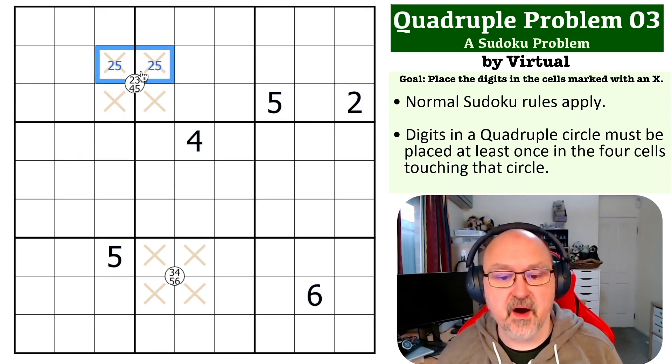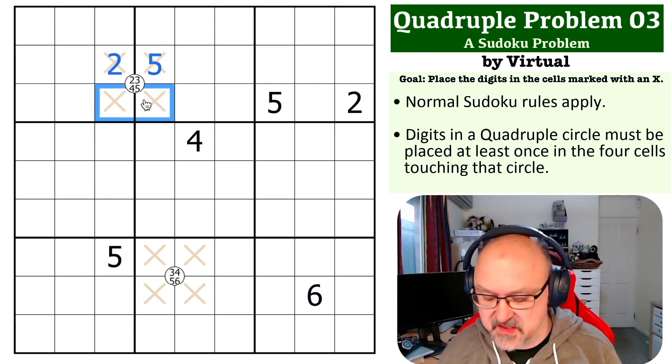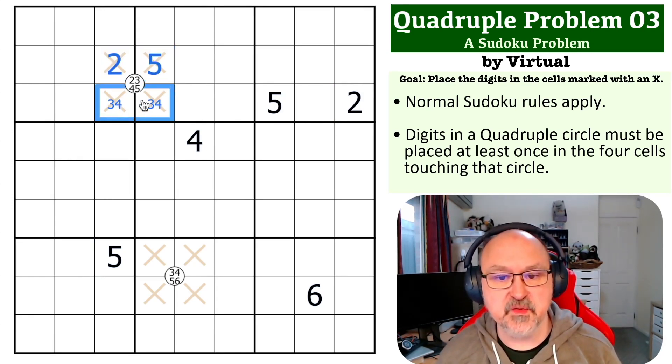So this becomes 2, 5, and there is a 5 here looking at it making this the 2 and this the 5. We still need to put a 3 and a 4 in here, which we cannot resolve.